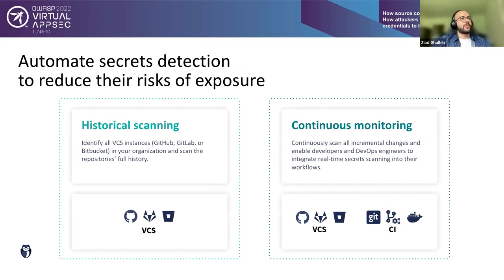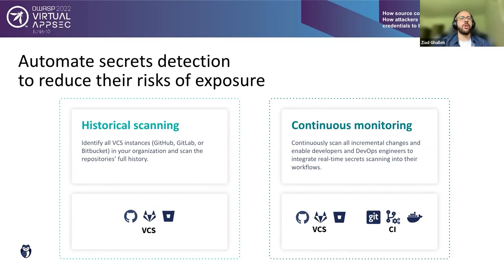One way to reduce the risk is to automate detection throughout the software development life cycle. You want to perform historical scanning to identify all VCS instances and scan full repository history, as well as continuously monitor all incremental changes and incoming code to the shared codebase. You also want to enable developers and DevOps engineers to integrate real-time secret scanning into their workflows — in the VCS, on local workstations, and in CI environments.